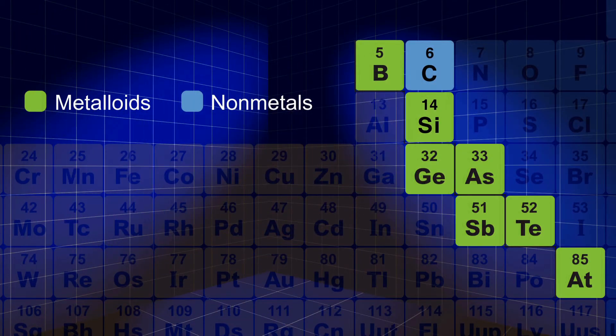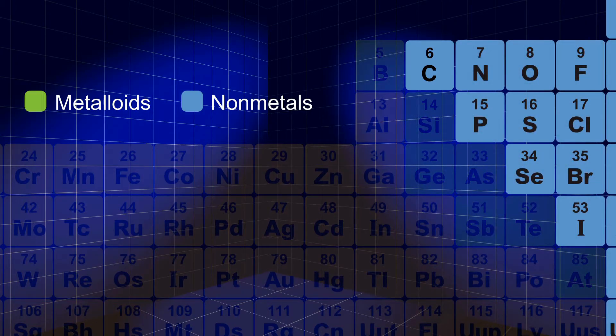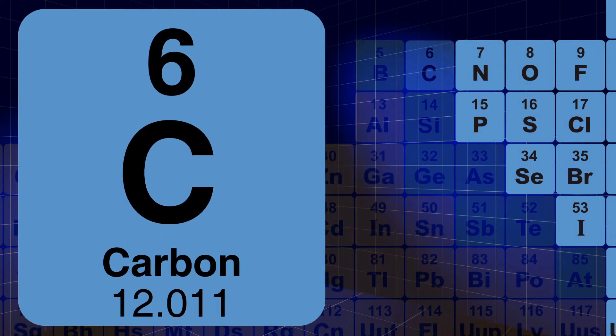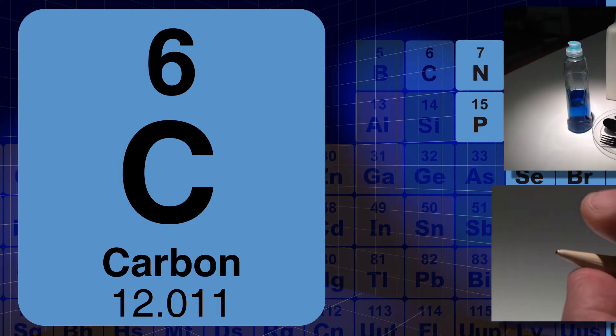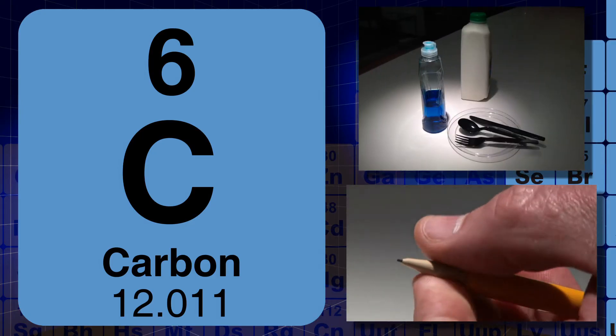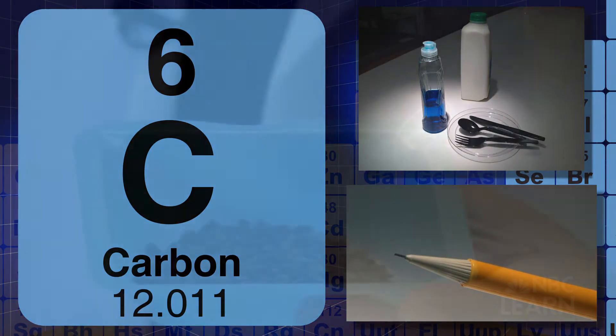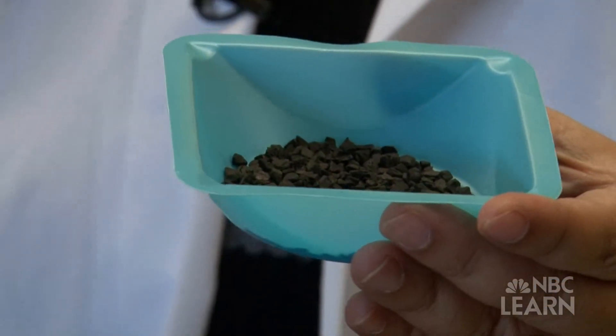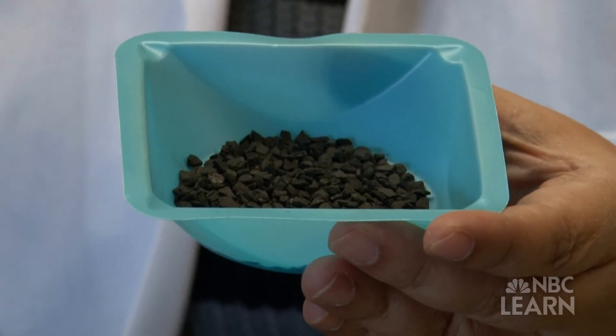Just above silicon on the periodic table is an element called carbon. Carbon is an example of a non-metal that can be found in many items, from plastic bottles to pencils. This is how it looks. This is nothing but charcoal. This is an elemental form.